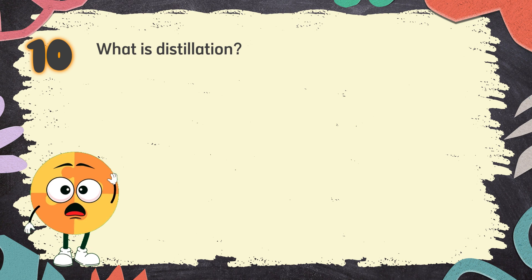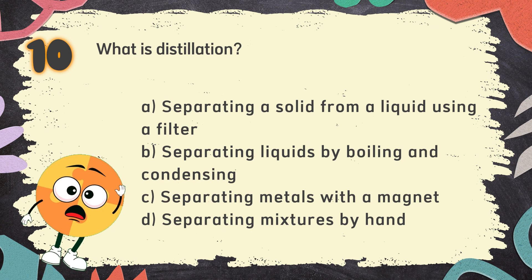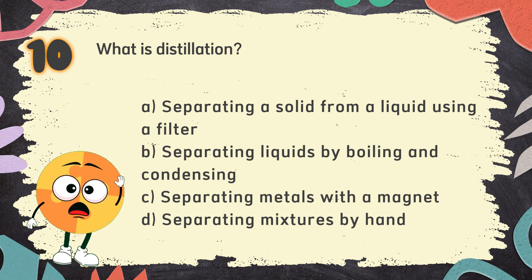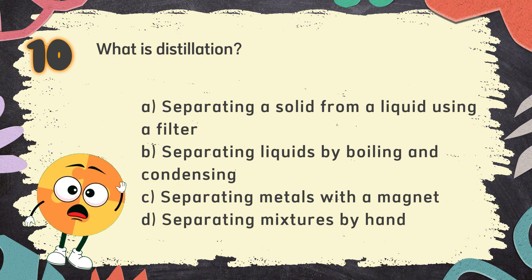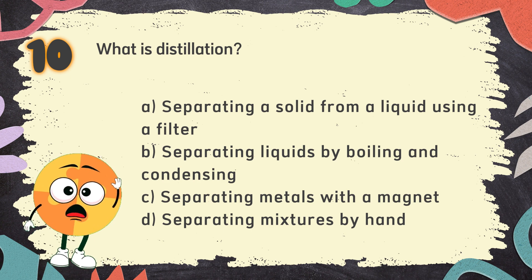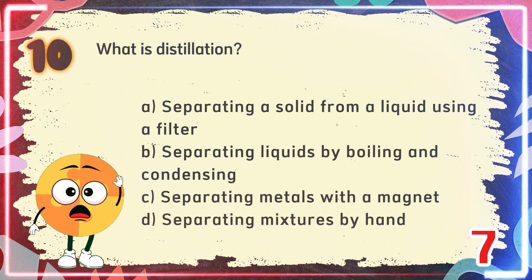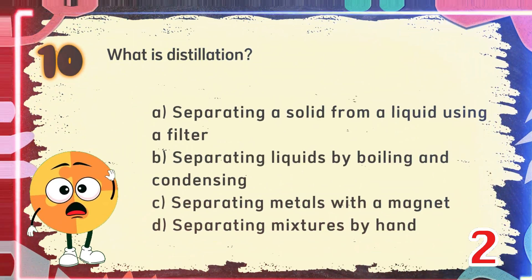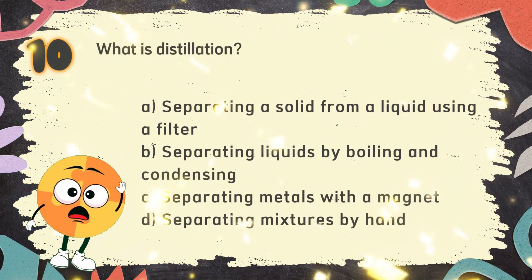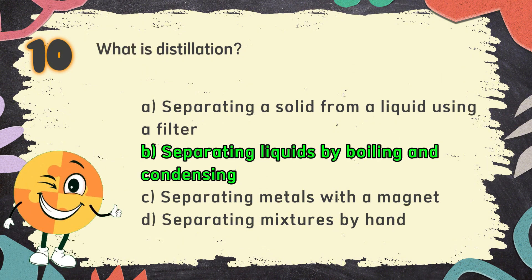Number 10. What is distillation? The choices are: A. Separating a solid from a liquid using a filter. B. Separating liquids by boiling and condensing. C. Separating metals with a magnet. D. Separating mixtures by hand. The correct answer is B: Separating liquids by boiling and condensing.